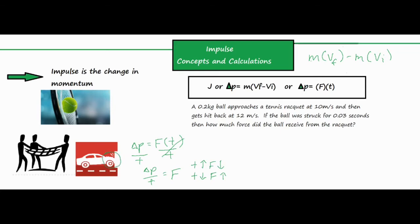A second application is the crumple zone on the front of a car. It compresses like a spring or accordion. If the crumple zone takes a little more time to get crushed and bring the car to rest, it decreases the forces on the car and keeps passengers safer. If you had a very rigid material that struck a wall with no give, it would stop very quickly, have a really short impact time, and therefore increase the force.